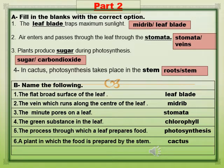Number 4: The green substance in the leaf is called chlorophyll. The process through which a leaf prepares food is called photosynthesis. A plant in which the food is prepared by the stem is called cactus.